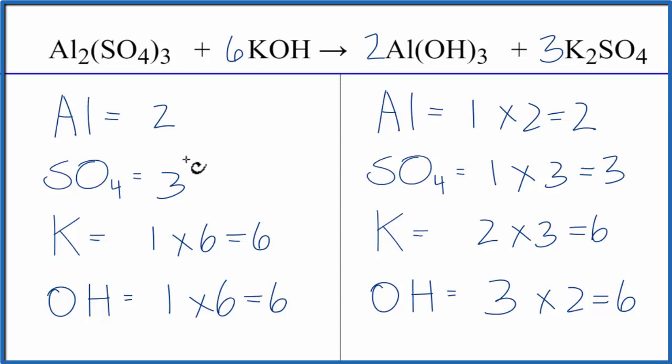This is Dr. B with the balanced equation for Al2(SO4)3 plus KOH, aluminum sulfate plus potassium hydroxide. Thanks for watching.